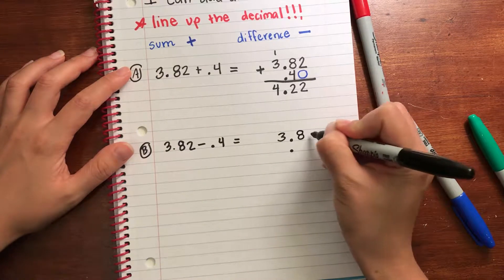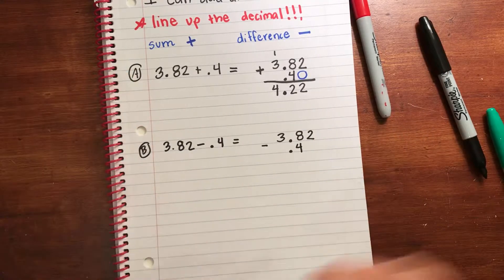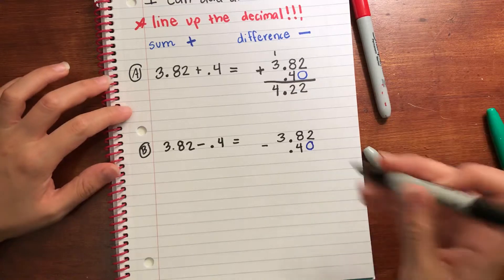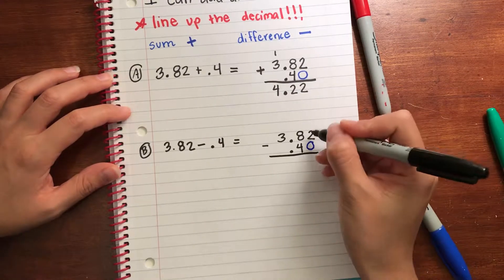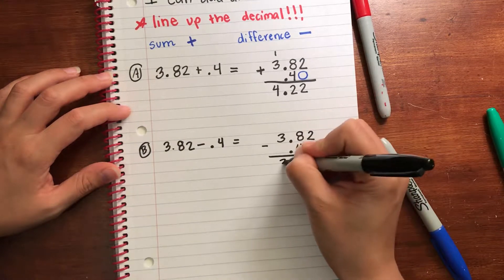Three ones, eight tenths, two hundredths, minus four tenths. And write in that zero after the four because four tenths and forty hundredths is the same thing. Two, four, and your decimal, three.